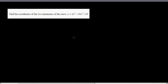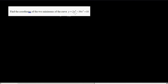Find the coordinates of two points, two minimums of the curve y equal to 2x raised to 4 minus 36x squared plus 18.